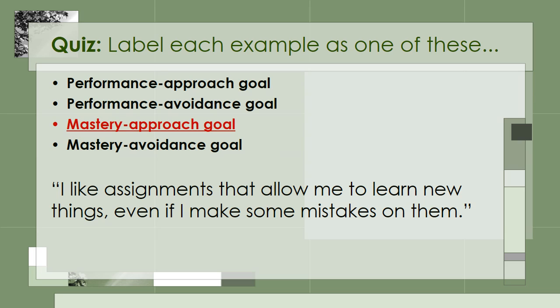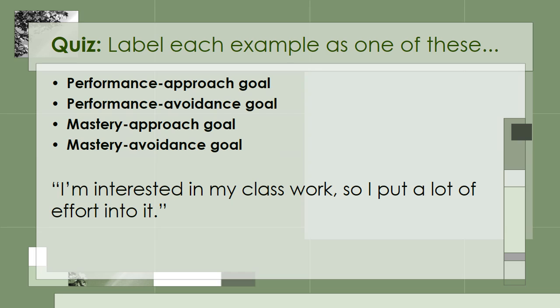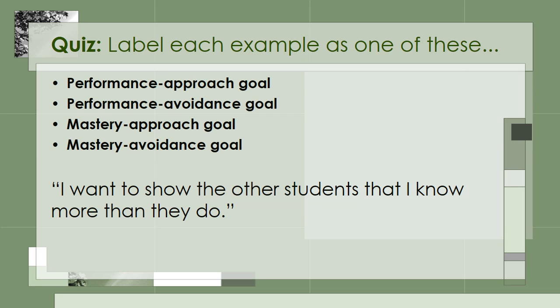Let's do another one. 'I'm interested in my classwork, so I put a lot of effort into it.' I tried to trick you by giving you another one that was similar to the last example. This one is also a Mastery Approach Goal. Mastery goals are often measured with items like this that assess a student's interest or enjoyment. This student says, 'I want to show the other students that I know more than they do.' This student demonstrates a Performance Approach Goal because she actively desires to demonstrate her competence to the other students.